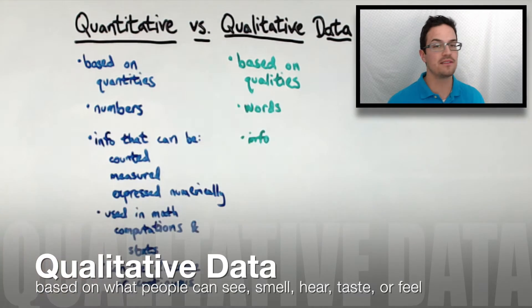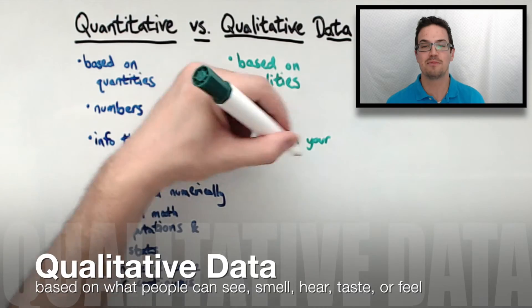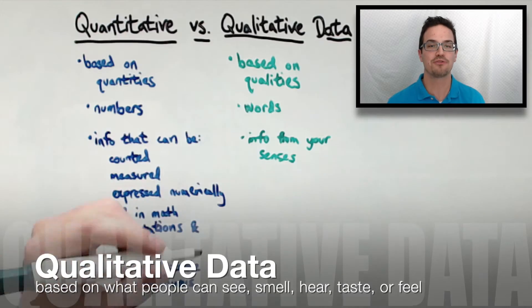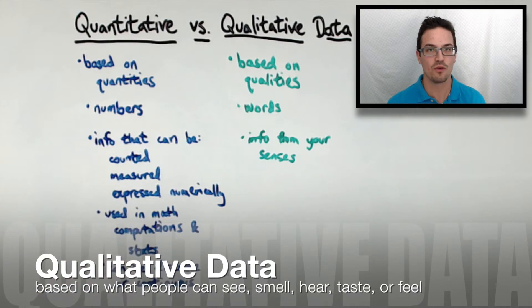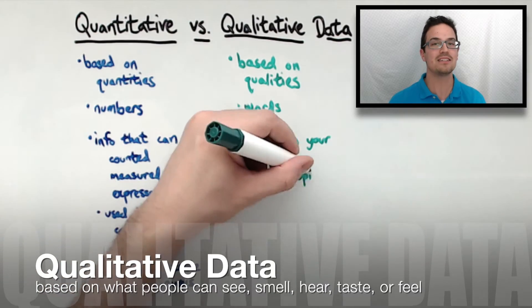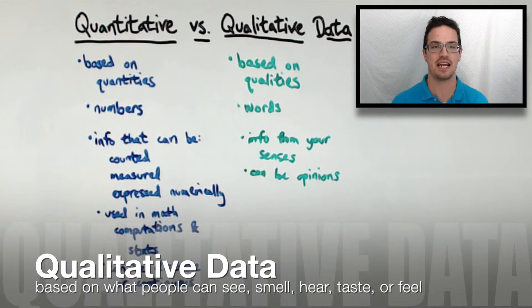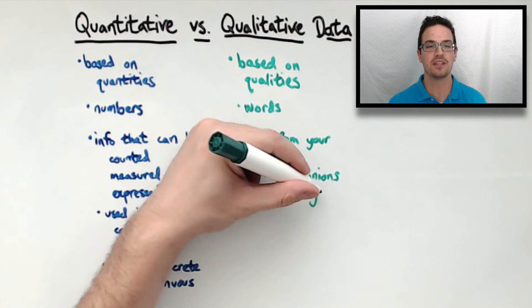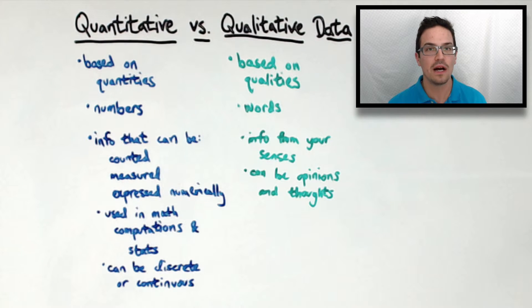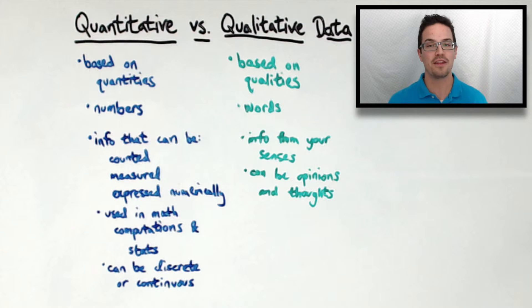In contrast, qualitative data is based on observations from any of your senses — so whatever you can see, smell, hear, taste, or feel. Words and descriptions are used, as well as opinions and thoughts, rather than numbers.